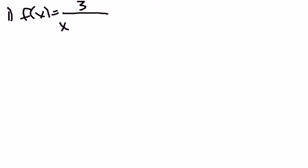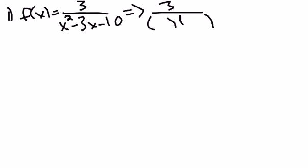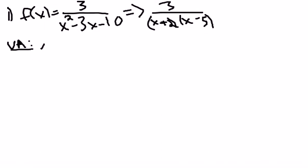Here's the function they give us. Right away I'm going to factor the bottom to reveal some much-needed information. So it's going to be x plus 2 times x minus 5 in the bottom. To start out, let's talk about the asymptotes — the vertical asymptotes are going to be x equals negative 2 and x equals 5.